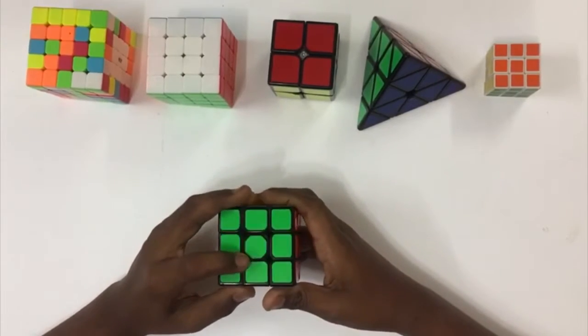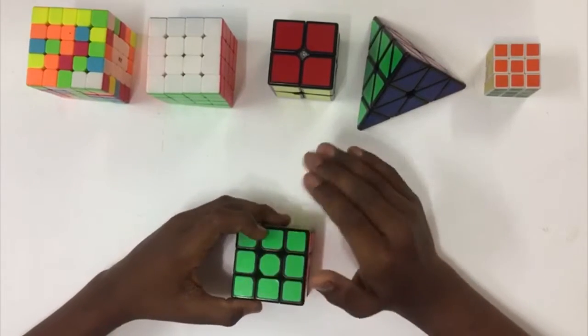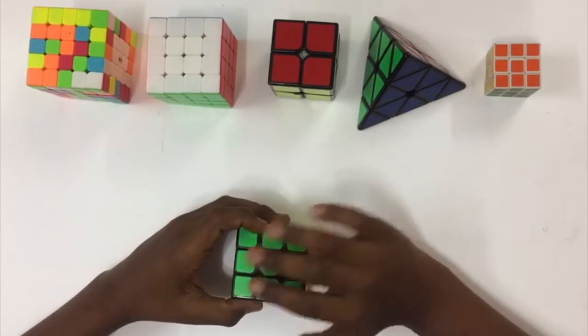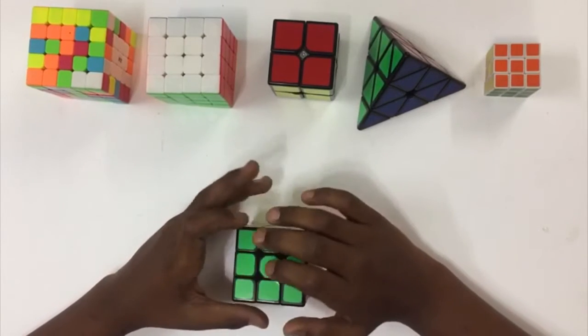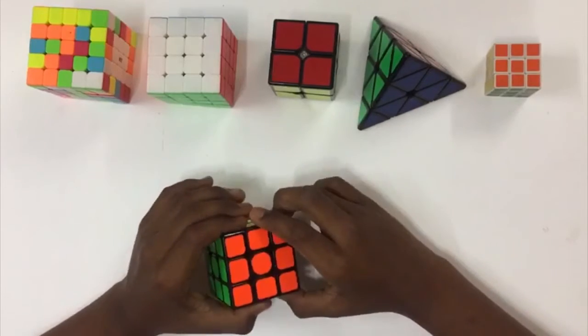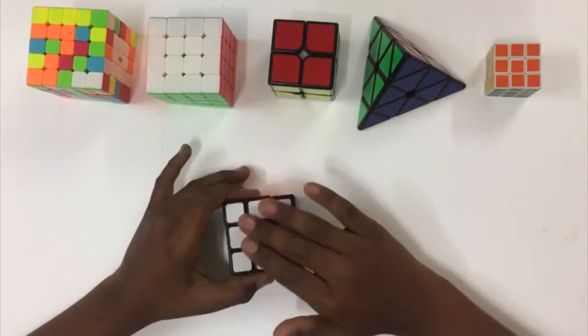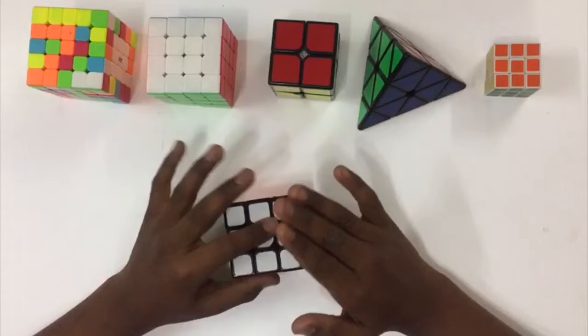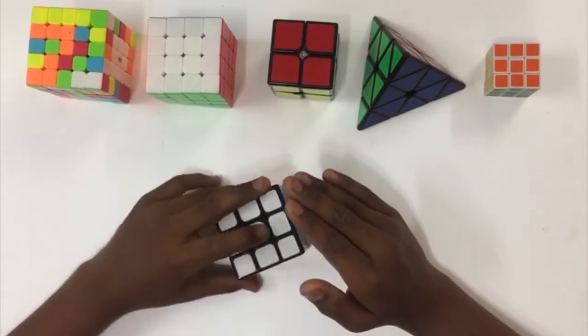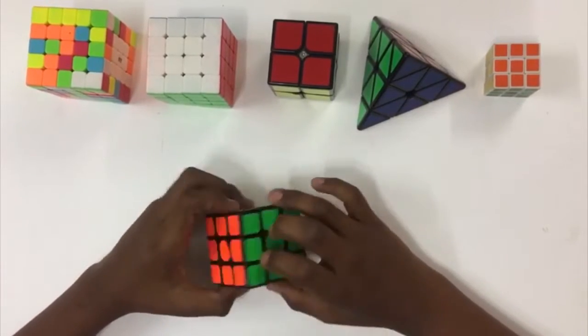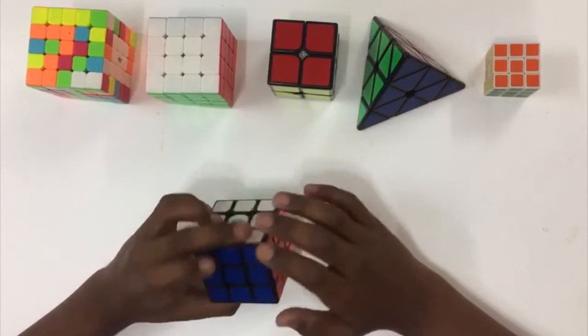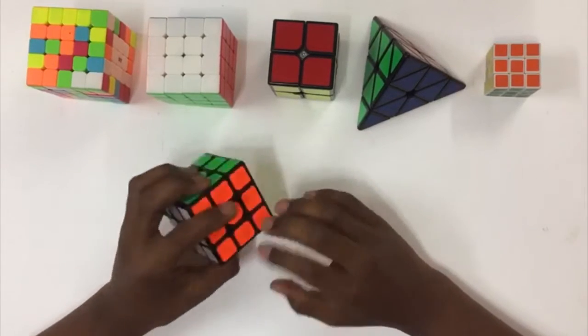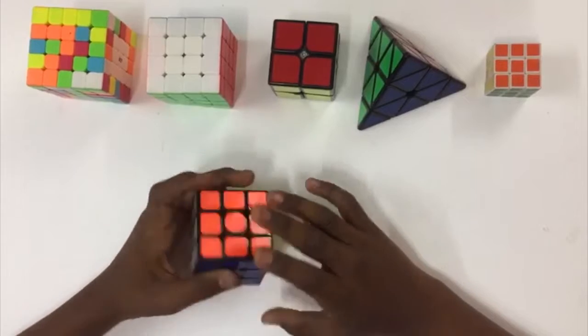The Rubik's cube face that faces you, not your face, can be any color. I'm going to choose white. Next to white there are multiple colors like red, green, orange, and blue. So next to white, not opposite of white.